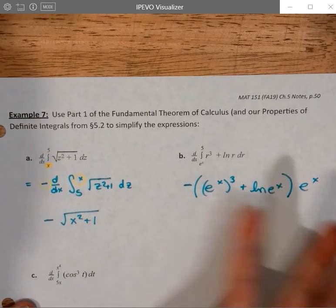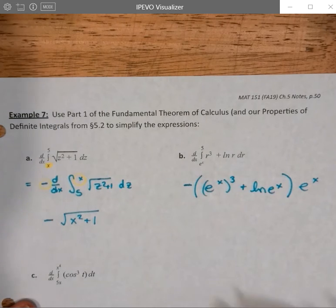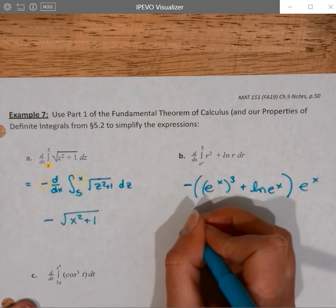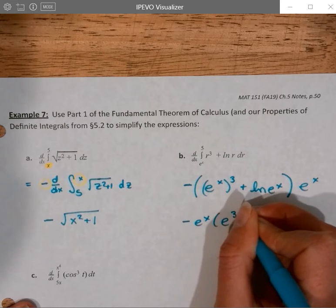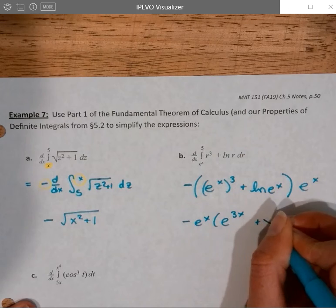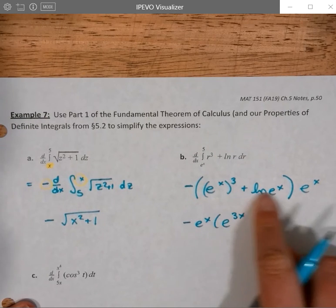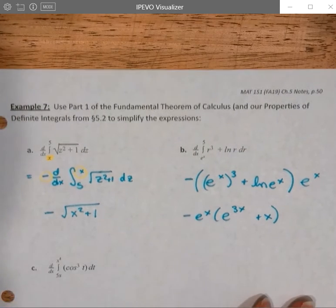I don't need to do it individually. They're both going to have it. Or I could distribute that if I wanted. So I have negative e to the x times e to the 3x plus x because that simplifies natural log of e to the x is x.